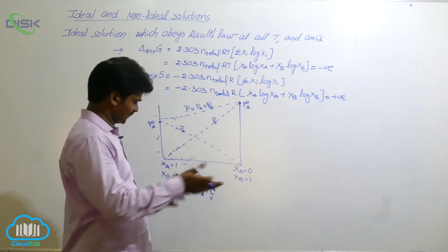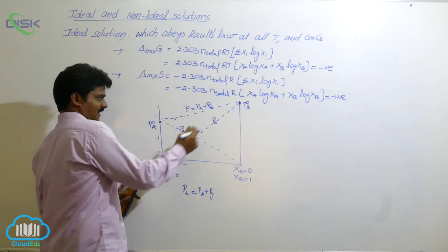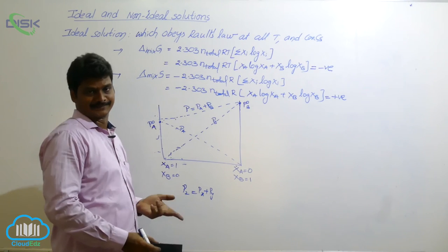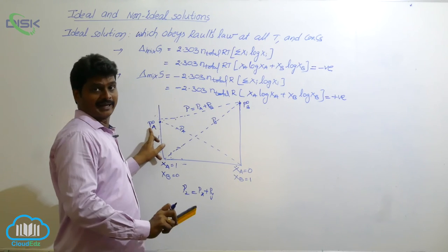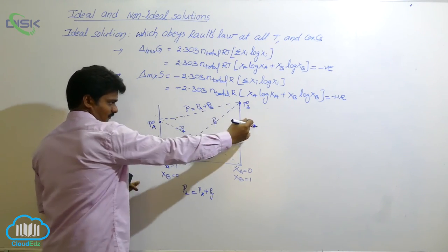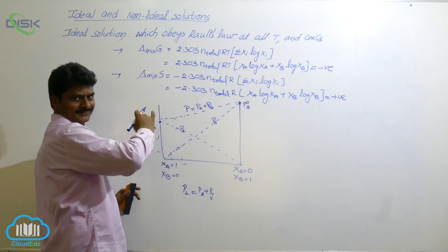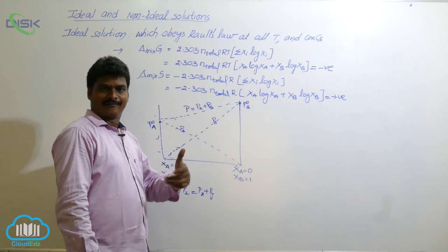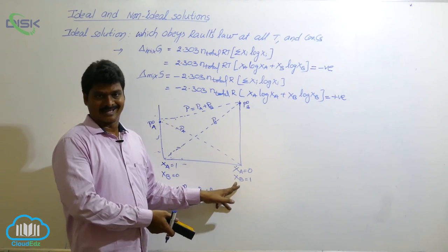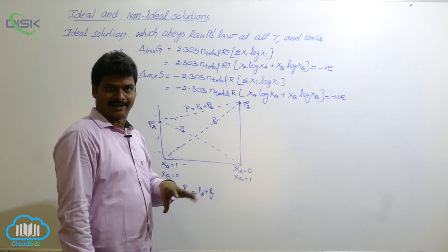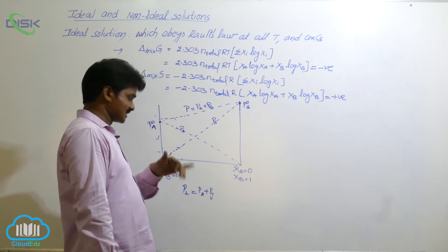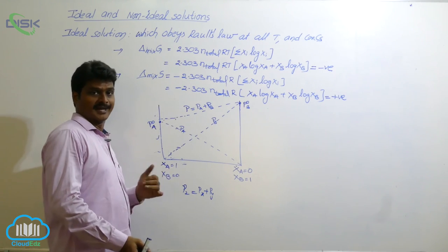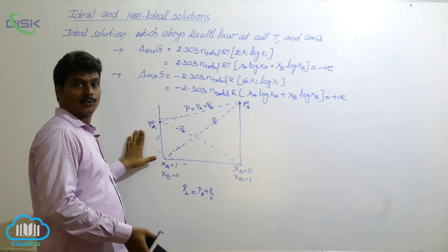When A is increasing — A being less volatile compared to B — if we go from right to left, A is increasing and B is decreasing, so total pressure decreases. When you increase the concentration of the more volatile component B, total pressure increases. When you increase the concentration of the less volatile component A, total pressure decreases. In that way, total pressure of the liquid mixture depends on the composition of A and B. This is the graph related to ideal solutions.